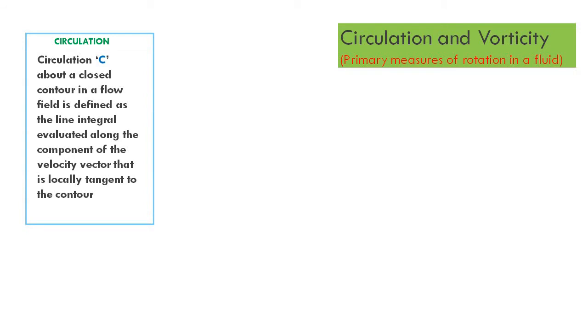In a rotational flow, fluid particles are generally subjected to translation, rotation, and deformation, making it a complex case to analyze. We will see how circulation and vorticity can be used to better describe a rotational flow. Circulation is represented by capital C about a closed contour in a flow field. It is defined as the line integral evaluated along the component of velocity vector that is locally tangent to the contour.